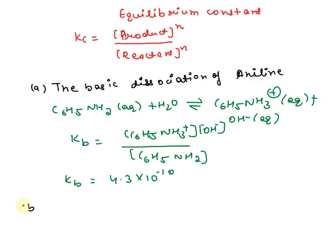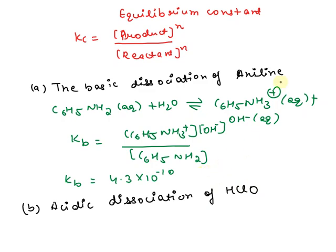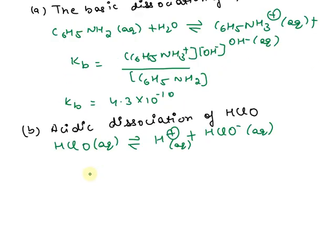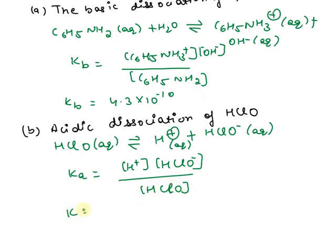Next, we write down the acidic dissociation of HClO. HClO dissociates to form H⁺ plus ClO⁻. The Ka expression is the concentration of H⁺ ion times the concentration of ClO⁻ ion, upon the concentration of HClO. The Ka value is 3.5 × 10⁻⁸.